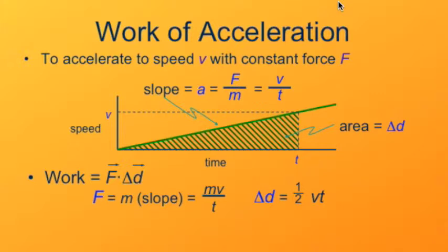The displacement, of course, is the area under that triangle. That triangle is half of a rectangle with side v and side t. So the rectangle has area vt. The triangle, therefore, has area 1 half vt.